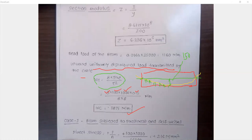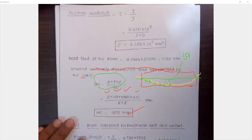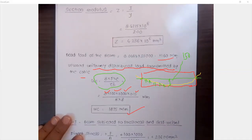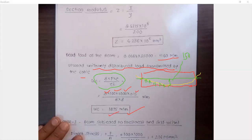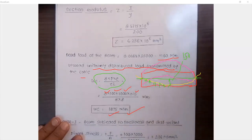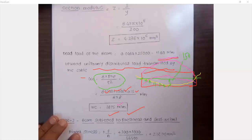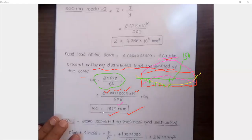The self-weight of the beam is 1,160 N/m downward, and the cable transmits 1,875 N/m upward. Since the upward pressure from the cable is greater than the self-weight, the beam bends upward (hogging). The net upward load causes a hogging bending moment. We now proceed to Case 1.